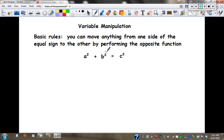For example, if you want to move b squared to the other side, we do the opposite function that it's attached to. a squared plus b squared, the opposite is minus b squared. And now the new formula would be c squared minus b squared equals a squared.